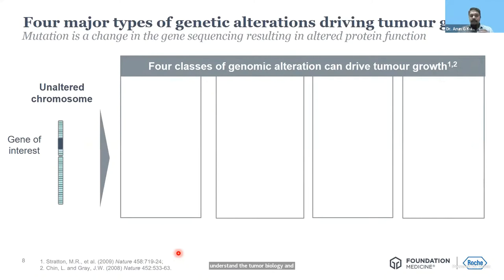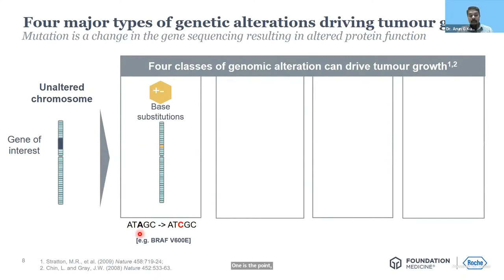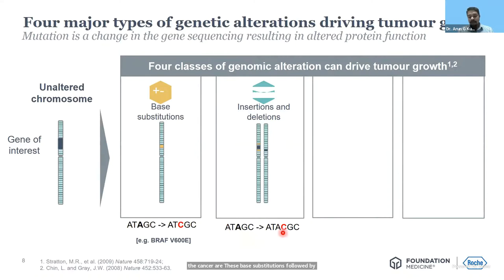Overall, mutations in the human genome can be categorized into four major categories. The first is point mutations, which come under base substitutions, where one nucleotide becomes another. Classic examples include BRAF V600E, leading to one amino acid change. Almost 98% of all human mutations in cancer are these base substitutions. Next are small insertions and deletions, where one up to 45 nucleotides can get inserted or deleted — best examples being EGFR exon 19 deletions.